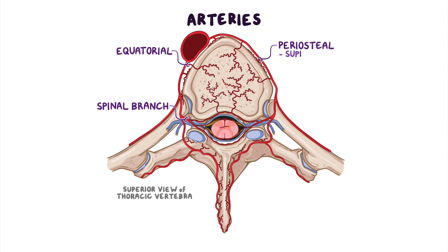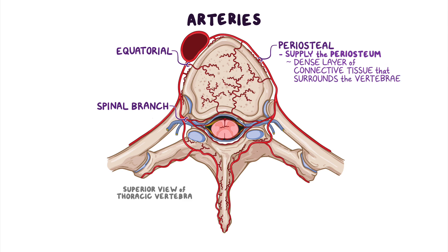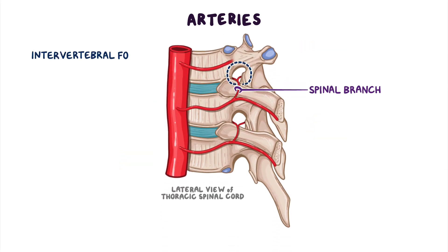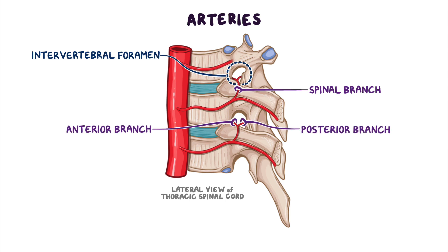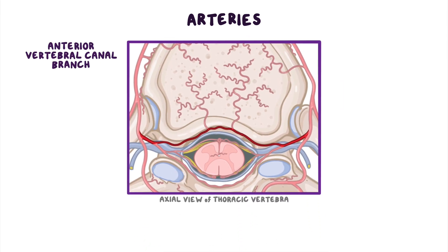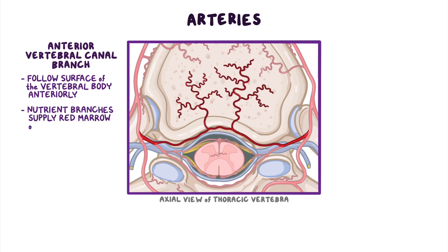Periosteal branches supply the periosteum, which is a dense layer of connective tissue that surrounds the vertebrae. The equatorial branches supply the vertebral bodies themselves. Spinal branches pass through the intervertebral foramina and divide into smaller anterior and posterior vertebral canal branches. Anterior vertebral canal branches follow the surface of the vertebral body anteriorly within the vertebral canal, where they send nutrient branches that supply the red marrow of the vertebral body.